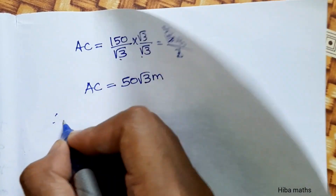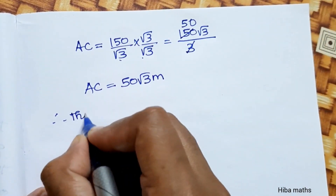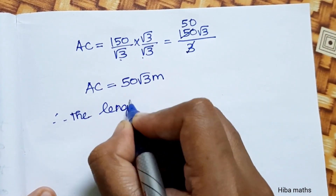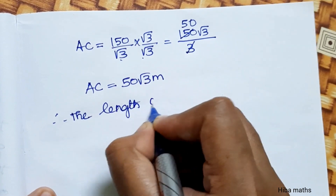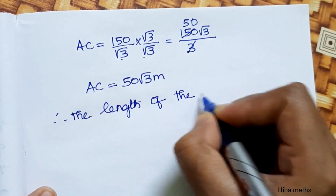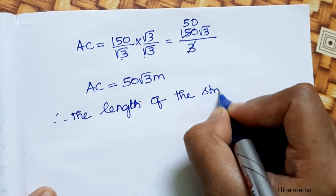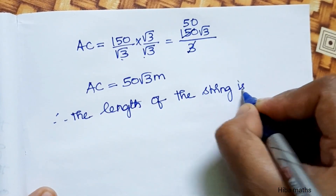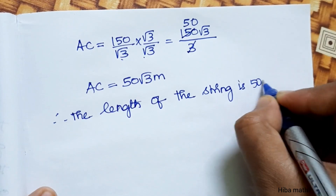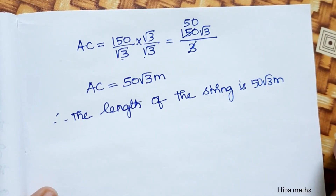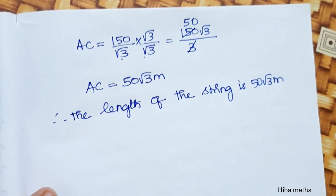Therefore, the length of the string is 50 root 3 meters. Thank you so much for watching.